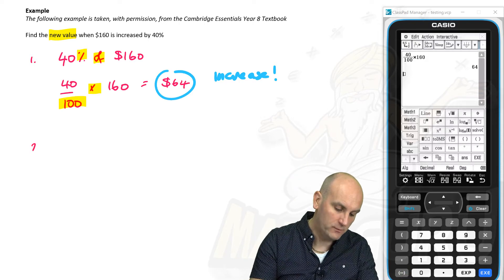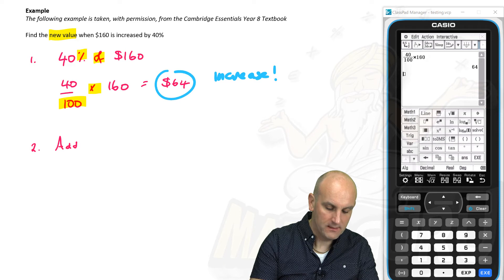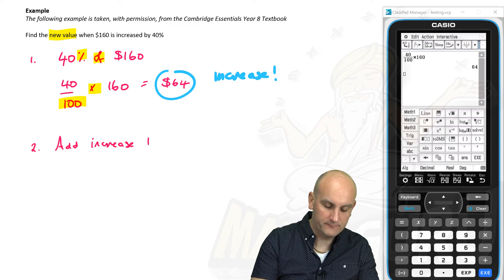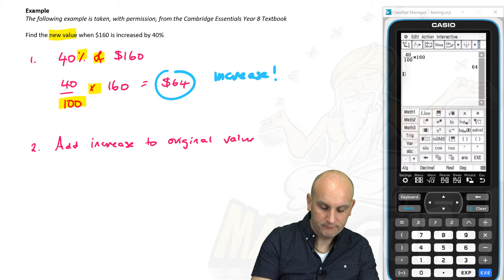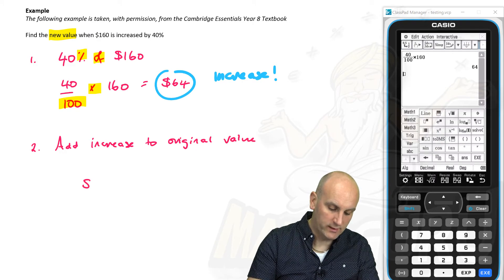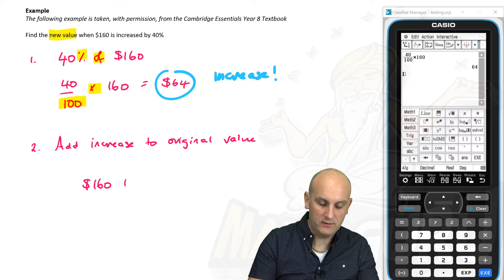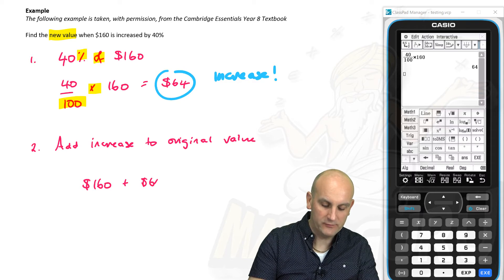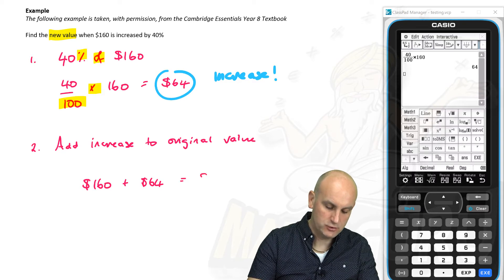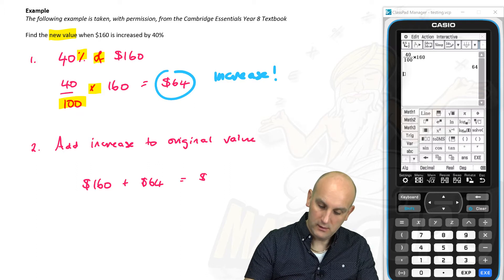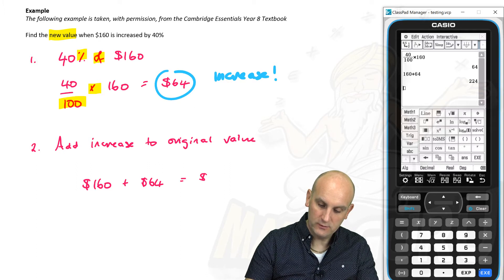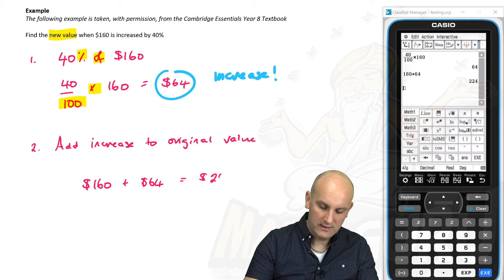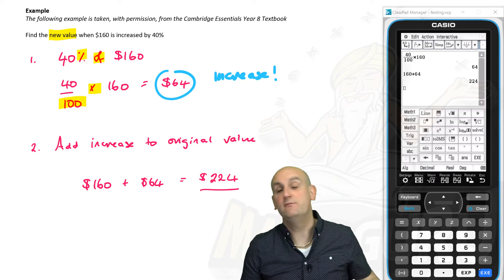Well, number two, you add the increase or decrease to the original value. And so we will then take $160, which is what I started with. I'm going to add on $64. We're going to add on $64, and that's going to give me $224. And there is my final answer.